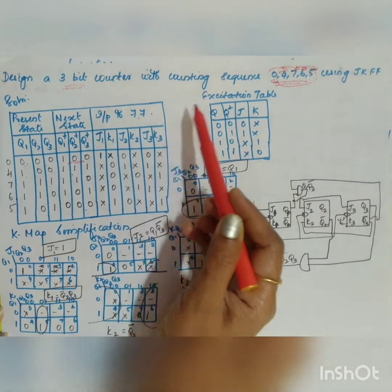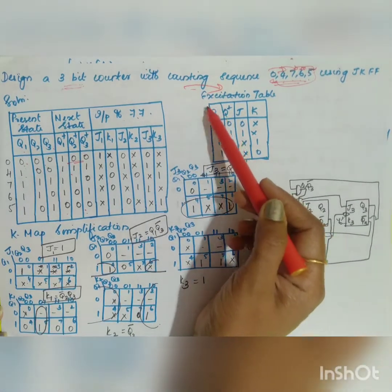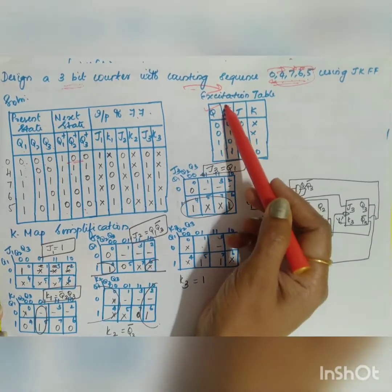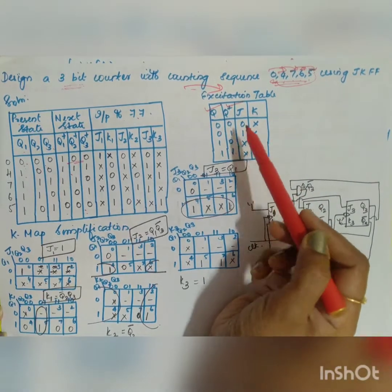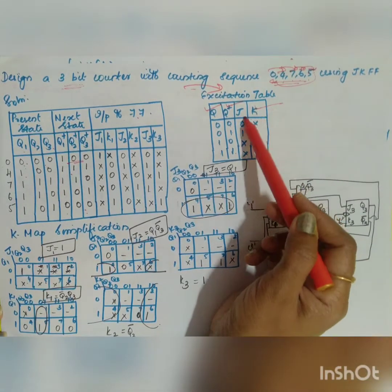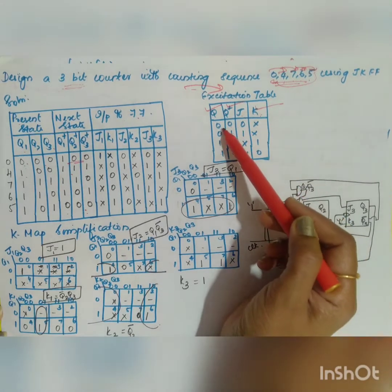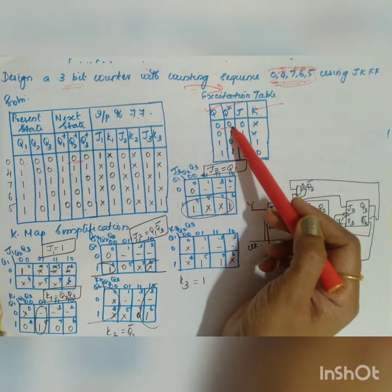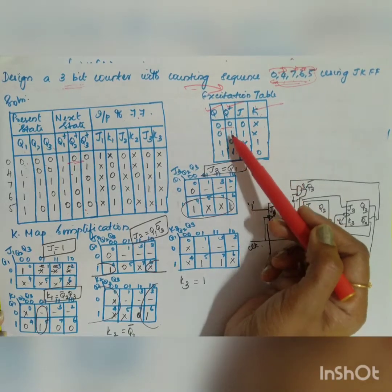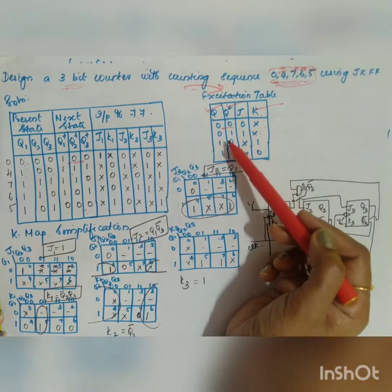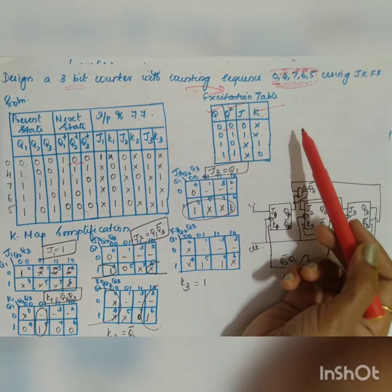To find the inputs to the flip-flops, use the excitation table of the JK flip-flop. Given present state and next state: if 0→0, JK = 0x; if 0→1, JK = 1x; if 1→0, JK = x1; and if 1→1, JK = x0.